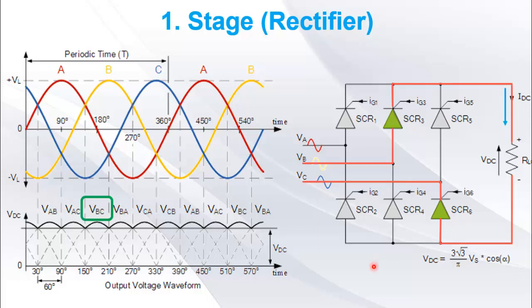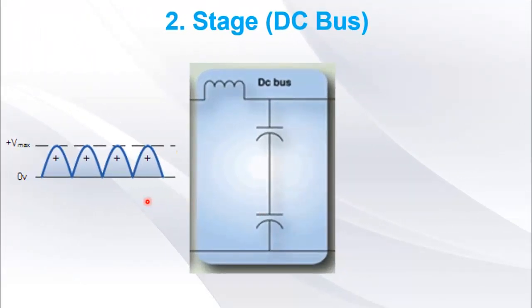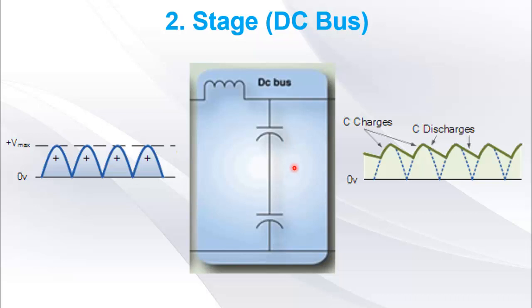The second stage is the rectifier stage. The output of the bridge rectifier is a pulsating DC voltage. To smooth out this pulsation and obtain a relatively constant DC voltage, filter capacitors are used. These capacitors store charge during the peaks of the pulsating voltage and discharge during the gaps, resulting in a more stable DC output.